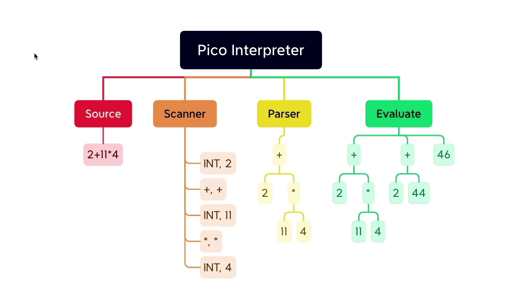If we take the Pico language, we start with source code like 2 plus 11 times 4. We scan that code and produce an array of tokens. Now each token will have two parts: a type and a value.